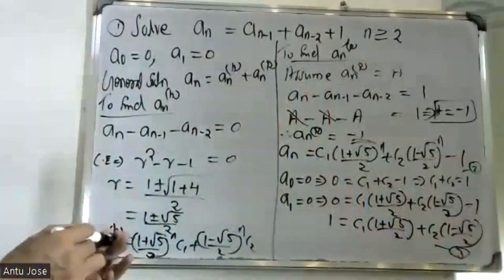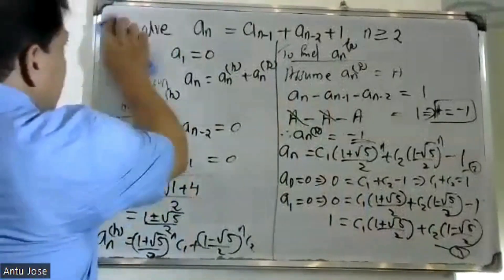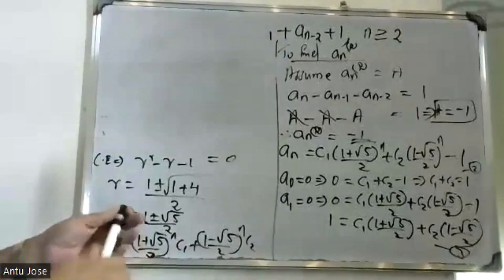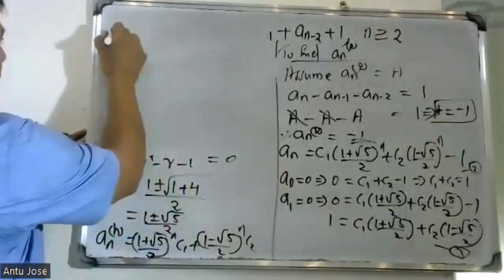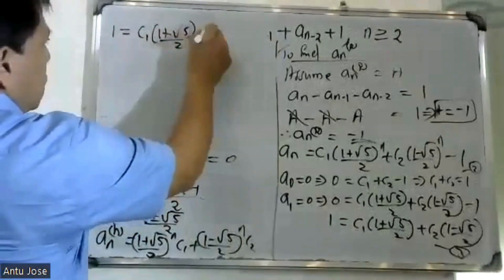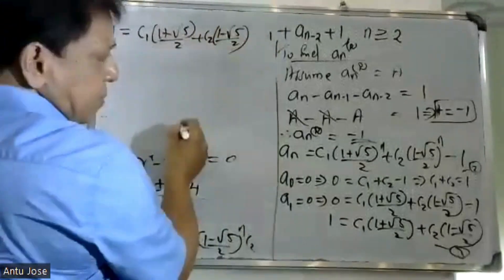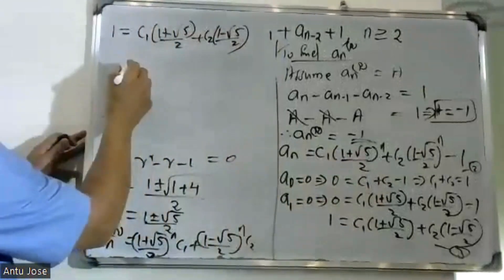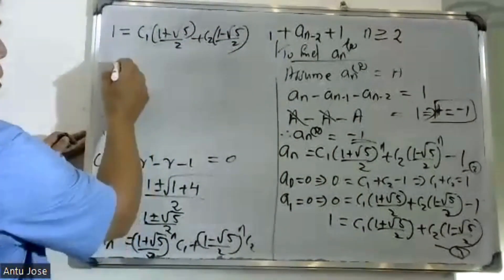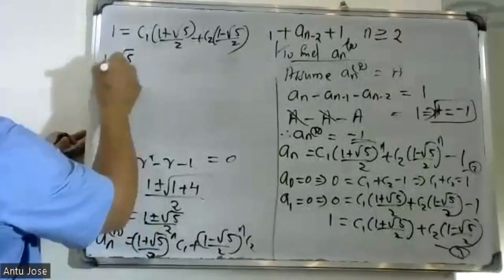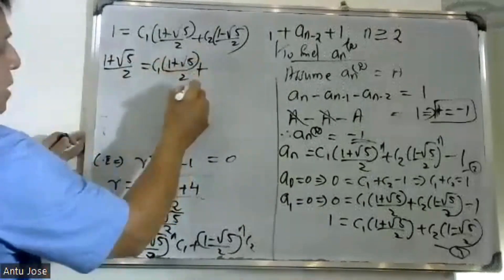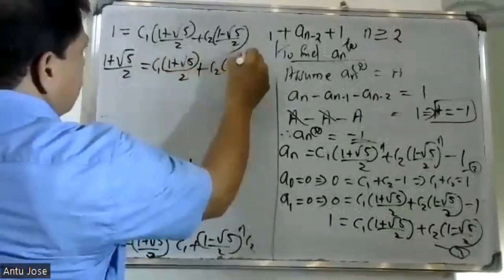Equation 2 and equation 3 are solved together. We solve to find the values of C1 and C2. The first equation is: C1 into (1 plus root 5 by 2) plus C2 into (1 minus root 5 by 2). From equation 3: 1 equals C1 into (1 plus root 5 by 2) plus C2 into (1 plus root 5 by 2).